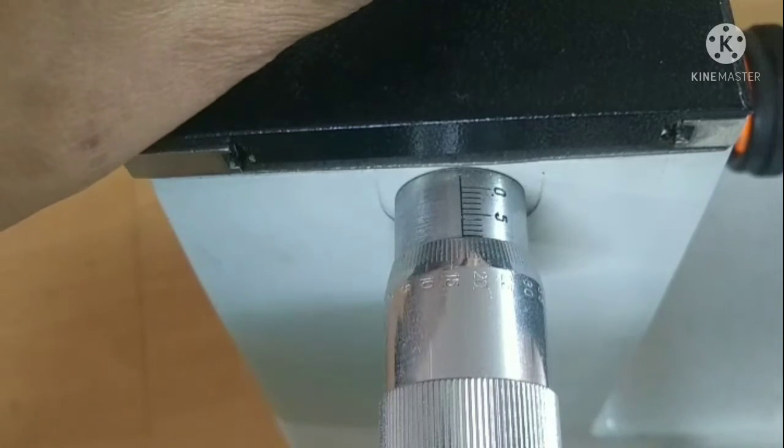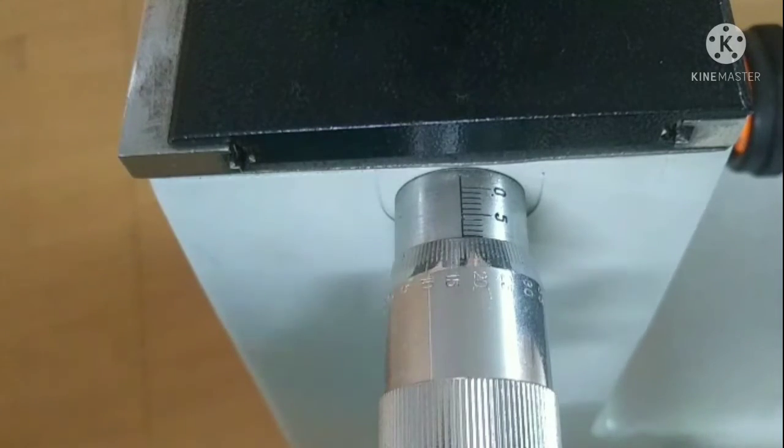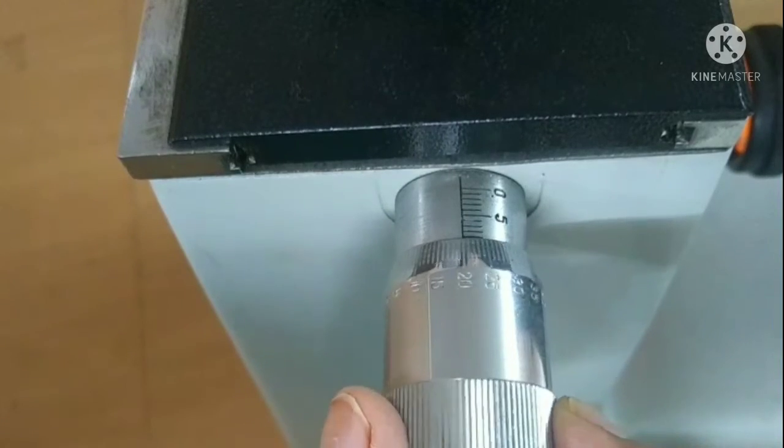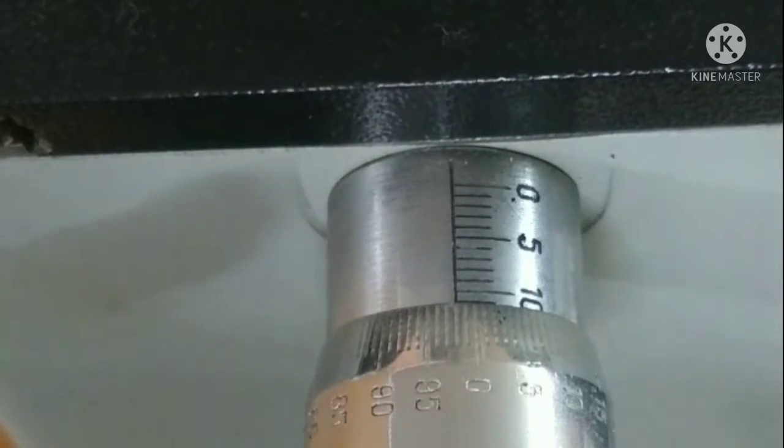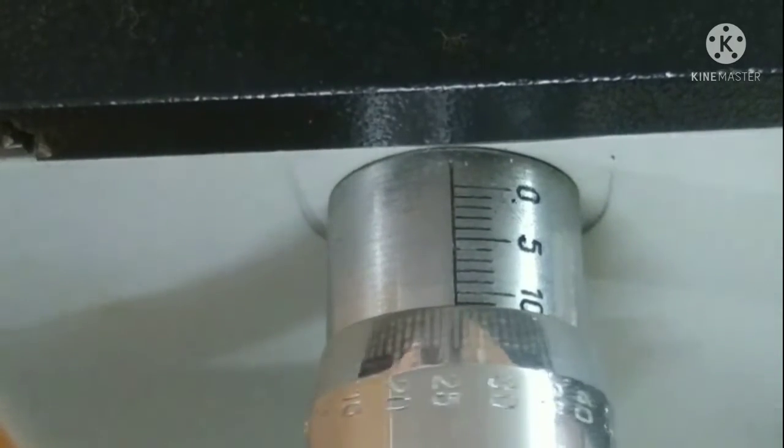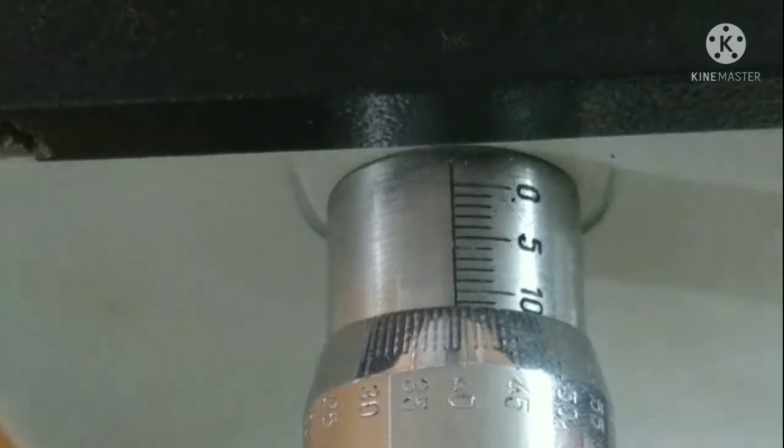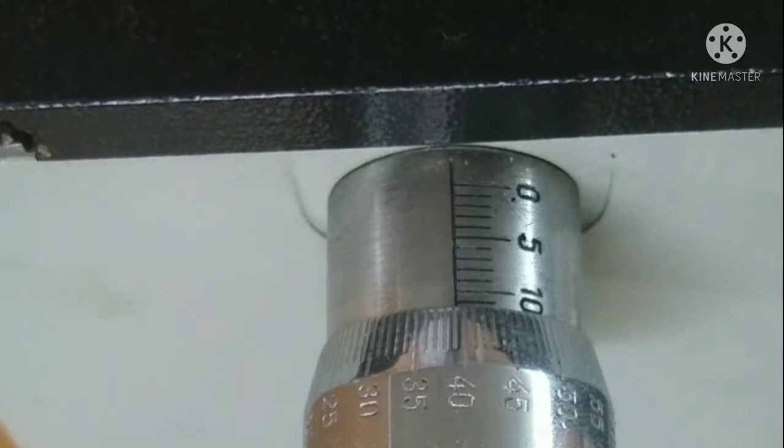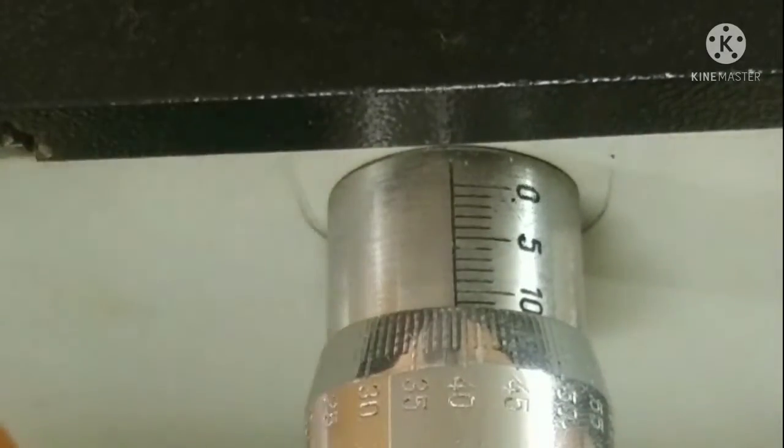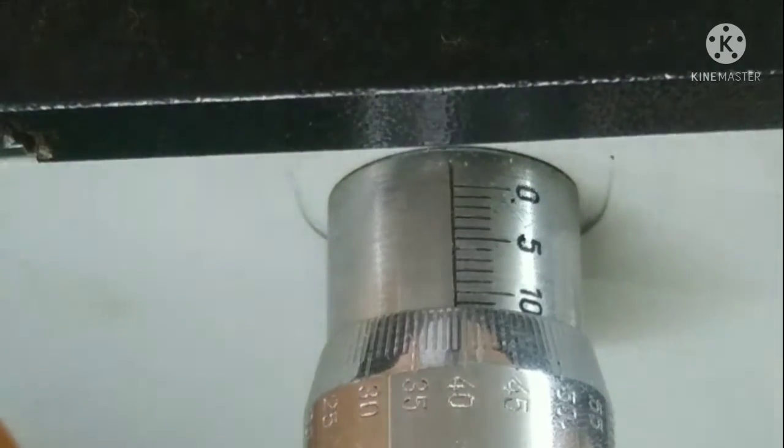Now let us see how to take readings with this. First of all we will find out the least count of this instrument. To take the main scale reading we will see whichever division of the main scale is coinciding with the circular scale. For example in this case 11th division is just before on the circular scale, so this will be 11 millimeter, the main scale reading. Then the division on the circular scale which is coinciding with the reference line, for example 39 in this case, will be multiplied with the least count and will be added to the main scale reading that will be our total observed reading.